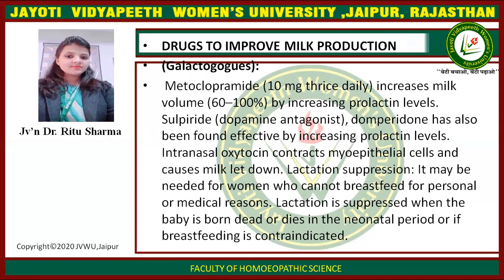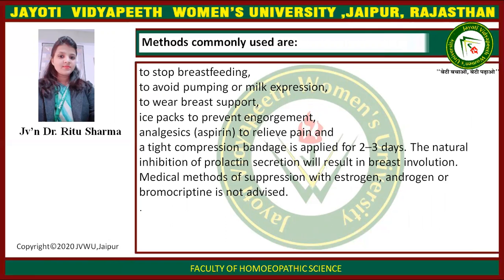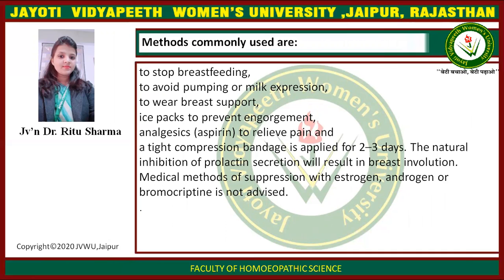8. Drugs to improve milk production. 9. Lactogogues — these are allopathic drugs to promote milk production. Methods commonly used to stop breastfeeding include: stopping breastfeeding, avoiding pumping or milk expression, wearing breast supports to prevent engorgement, analgesics to relieve pain, and a tight compression bandage applied for 2 to 3 days. 10. Neural inhibition of prolactin secretion will result in breast involution. 11. Medical method of suppression with estrogen, androgen, or bromocriptine is not advised.